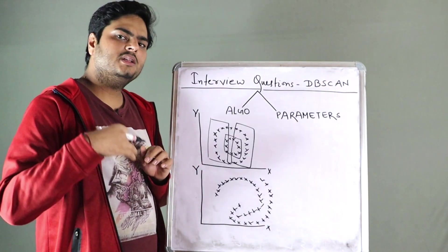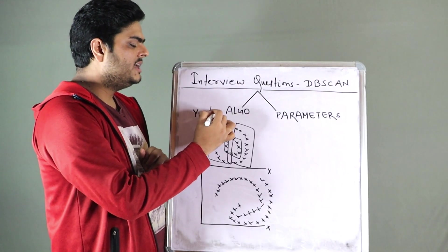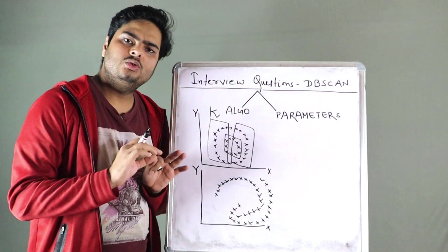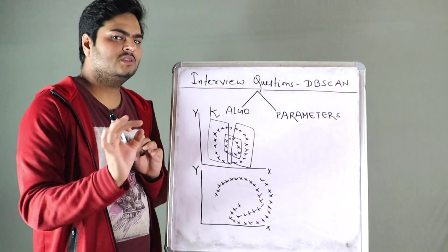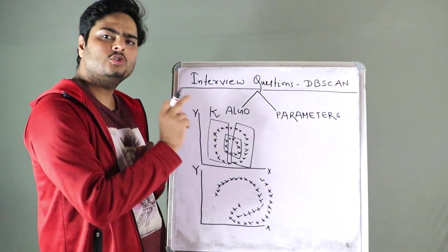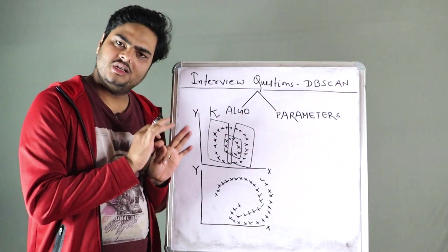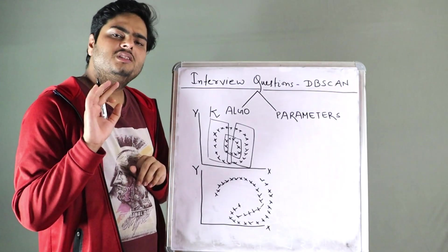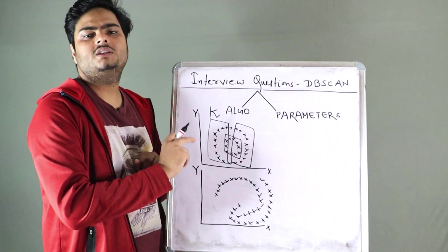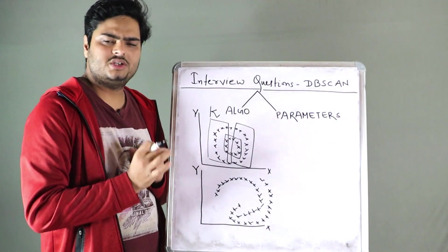People ask you, what are the advantages? Advantages will be, you no need to define K, like K-means clustering. You no need to say to the algorithm that, you know, you have to divide in two clusters or three clusters, no need of that. You no need to worry about noise and outliers much that you will be handled in density-based clustering very well as compared to K-means clustering. These are some of the advantages of your density-based or DB scan clustering, but everything comes at a cost.